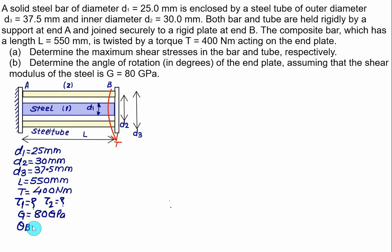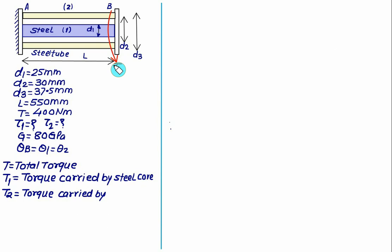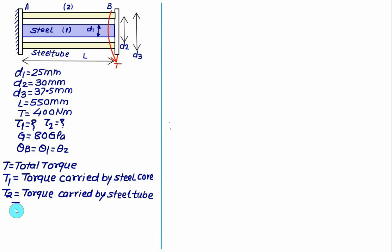Theta_B will be the same as theta_1 and theta_2, since this is a composite shaft. The applied torque is divided between the steel tube and the steel core. Total torque T equals T1 plus T2, where T1 is the torque carried by the solid steel core and T2 is the torque carried by the steel tube.